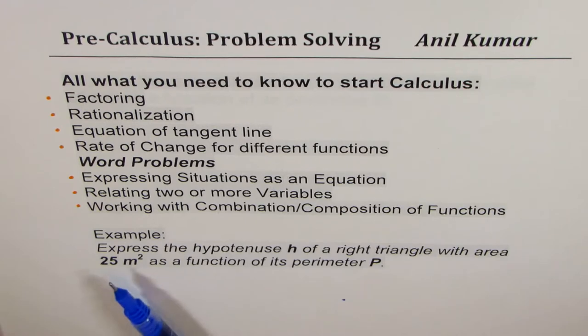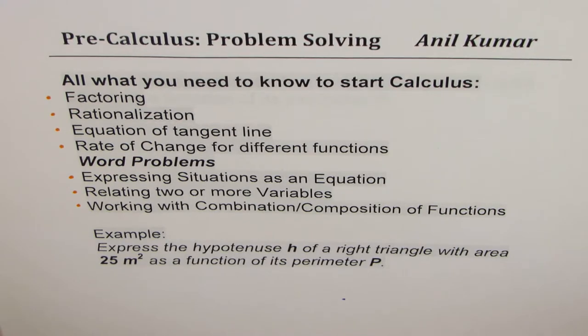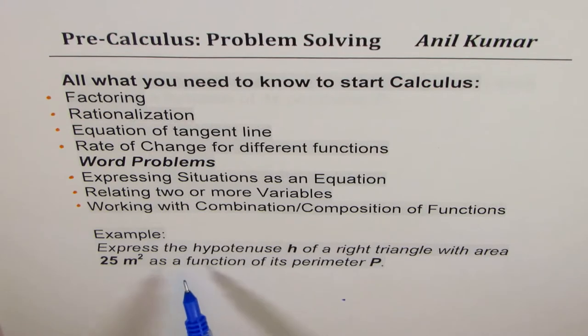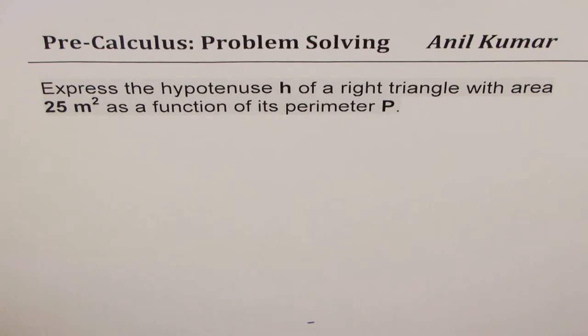To give you an example, here I've taken a very simple example which will give you a flavor of all this. So I'd like you to pause the video, answer this question, and in this series I'm going to take many such examples. So we'll begin with just one, which is to express hypotenuse h of a right triangle with area 25 meter square as function of its perimeter. So now let us see how to solve this question.